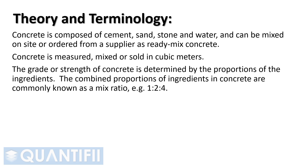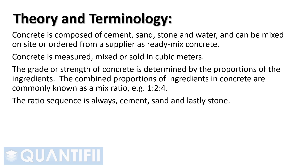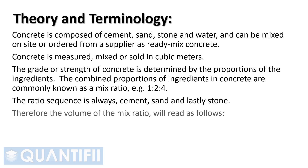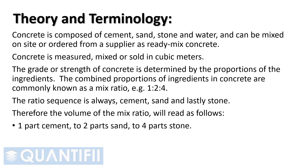The combined proportions of ingredients in concrete are commonly known as a mix ratio, for example, 1 to 2 to 4. The ratio sequence is always cement, sand, and lastly stone. Therefore the volume of the mixed ratio will read as follows: 1 part cement, to 2 part sand, to 4 part stone.